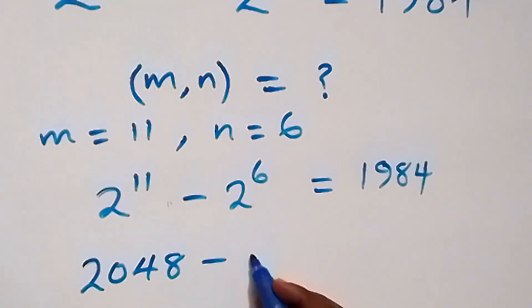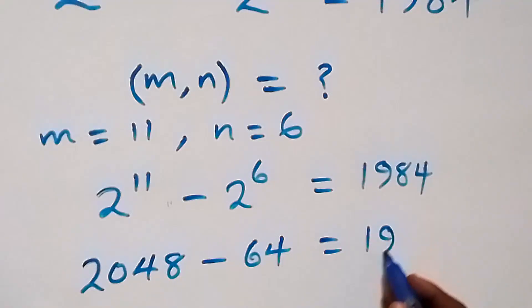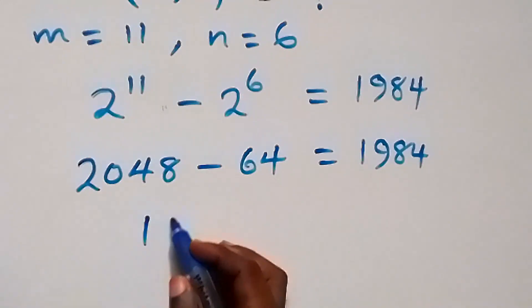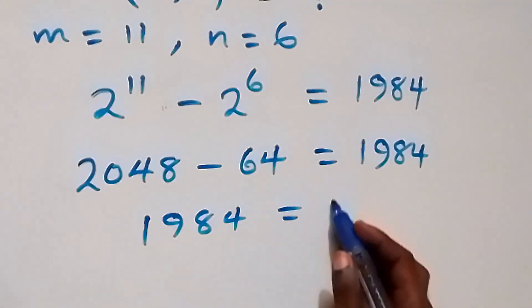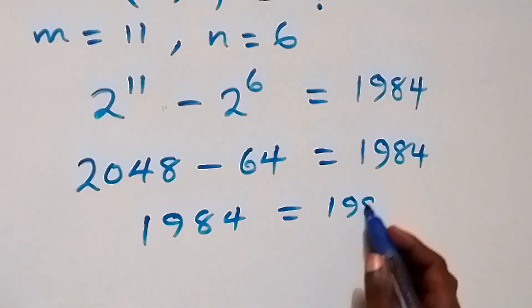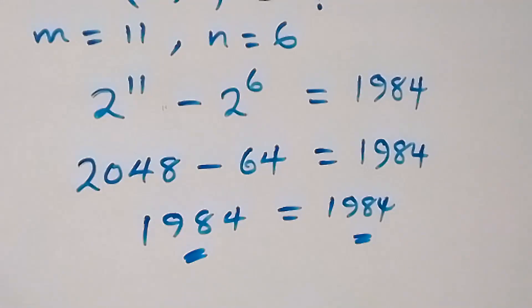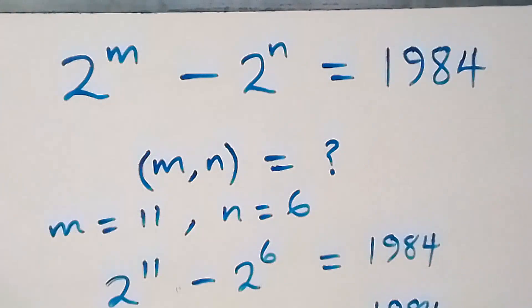Then, minus 2 raised to power 6, which is 64. So 2048 minus 64 equals 1984, which is the same as the right-hand side. Left-hand side equals right-hand side, confirming that m equals 11 and n equals 6 satisfies the given problem.